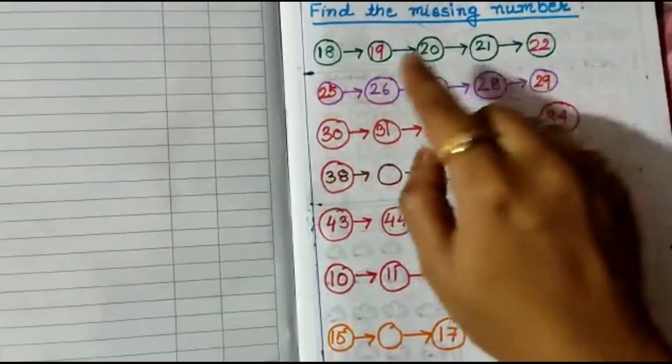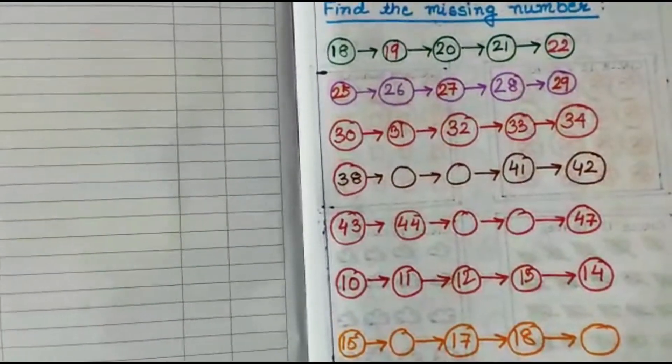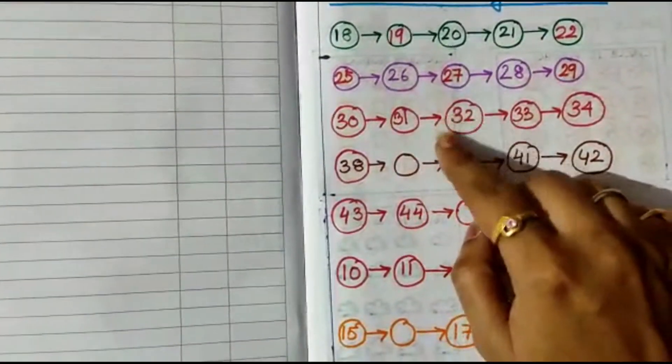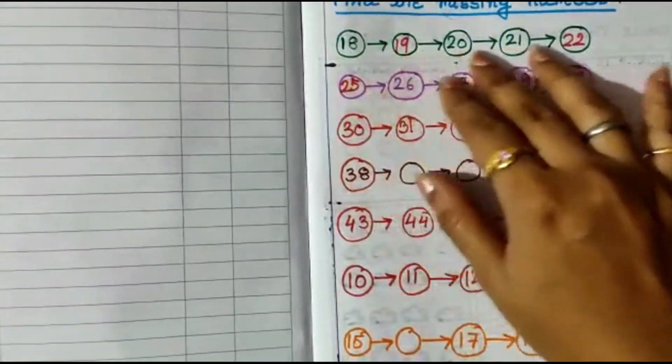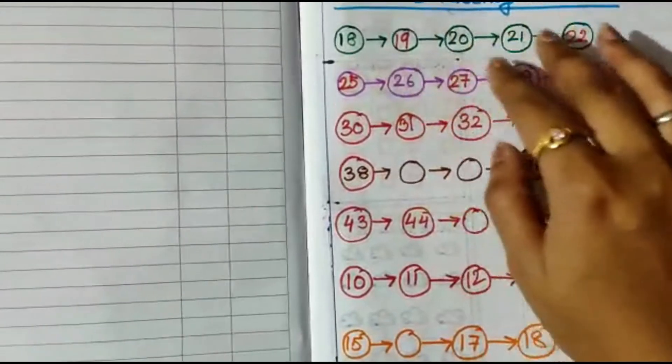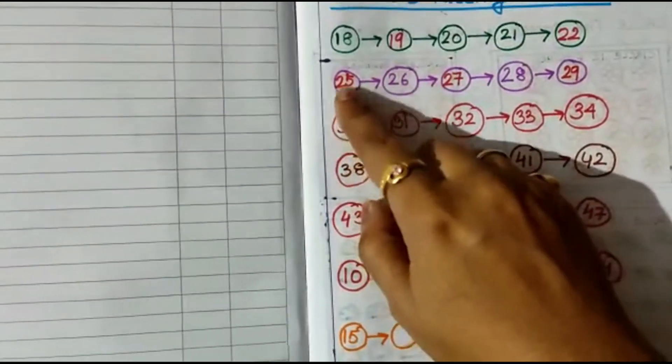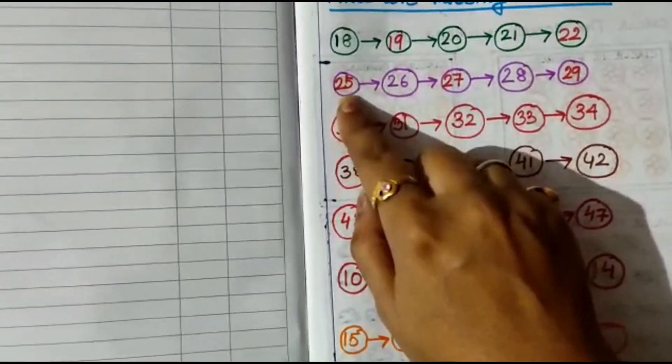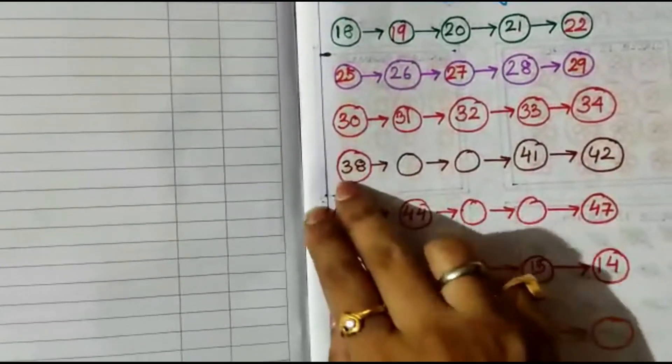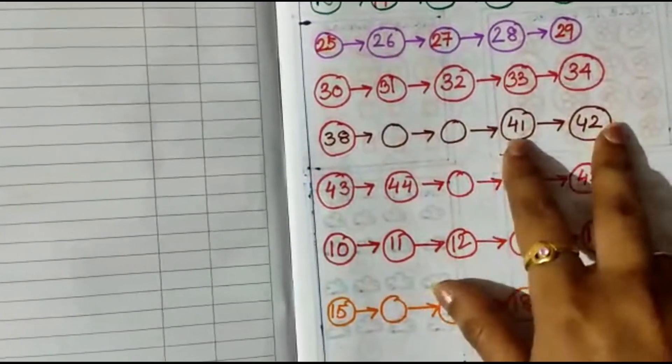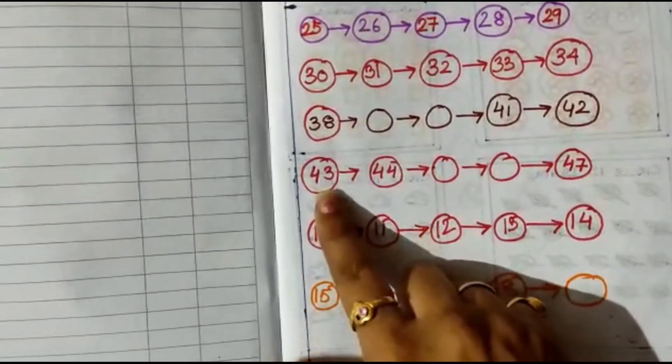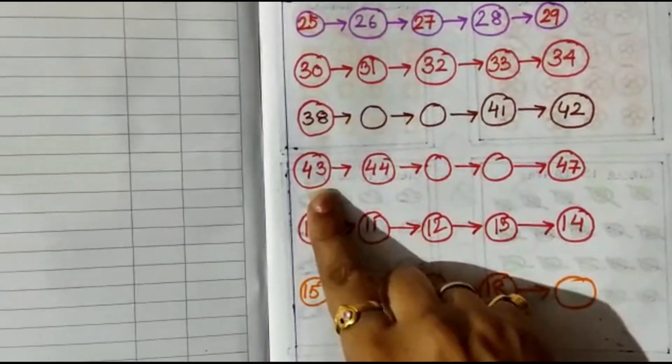I have drawn some circles with figures inside. If I draw some gaps in the circles, then I will draw them serial-wise. Here is 18, 19, 20, 21, 22, then 25, 26, 27, 28, 29, then 30, 31, 32, 33, then 38, 39, 40, 41, 42.